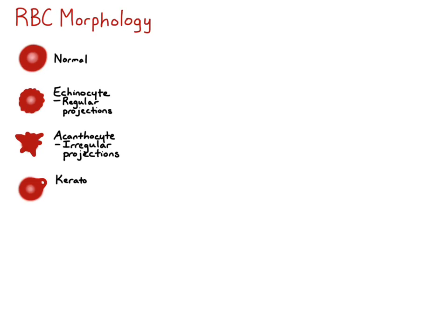A keratocyte is also known as a blister cell. It essentially has a small blister on the edge of the red cell, and if this blister were to break, it would produce two teeth — you can think of it as Dracula teeth sticking off. If one of Dracula's teeth were to fall out, then you'd be left with one tooth, like a toothless Dracula. All three of these morphologies are called keratocytes.